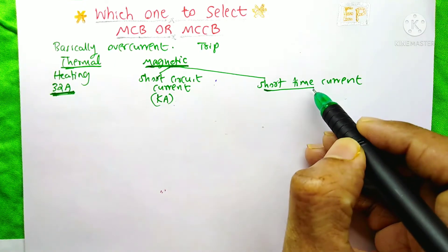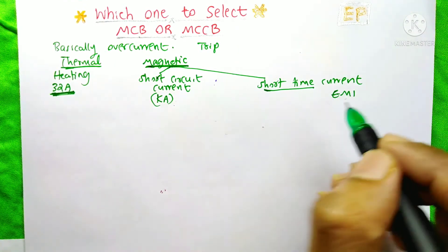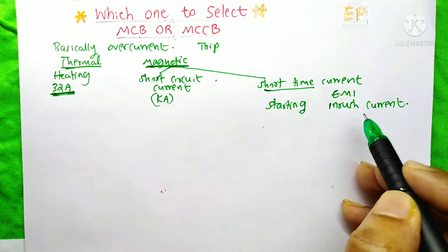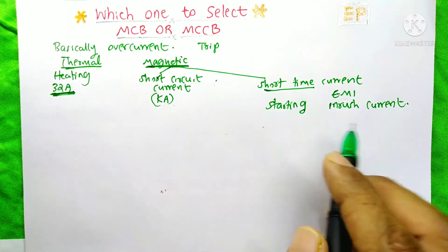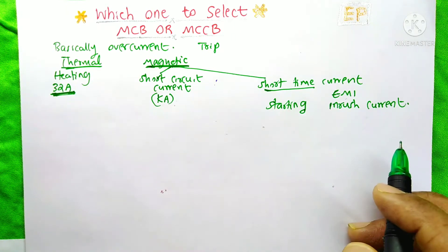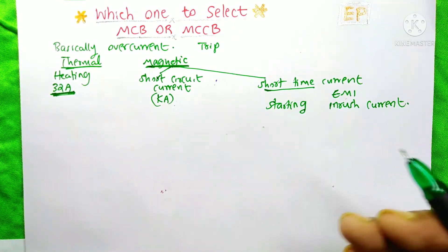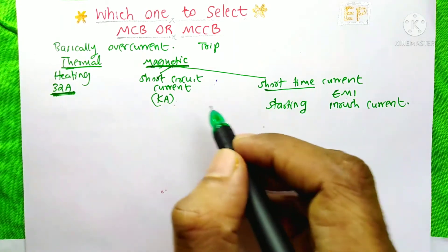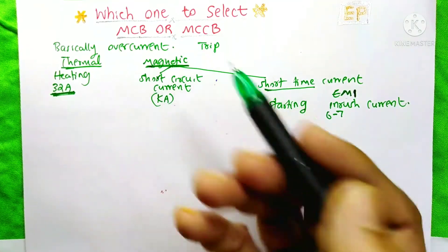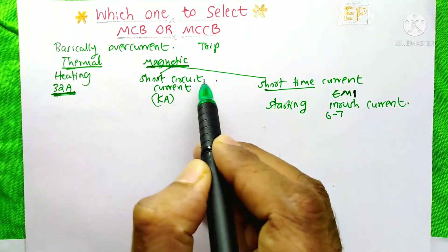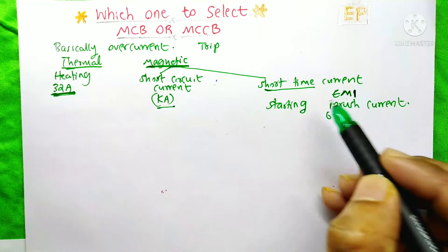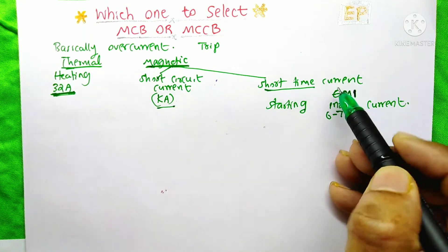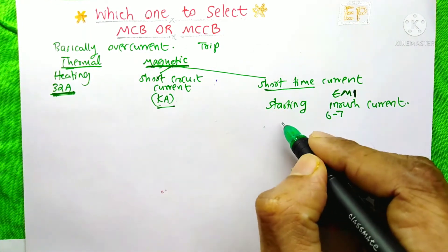Whenever any appliance working under the principle of electromagnetic induction starts up, it produces a high inrush current in the circuit. The MCB or MCCB should not trip because of this inrush current, as it is a normal occurrence and lasts only a few seconds. But sometimes this inrush current is more than expected, and then we need to trip the circuit. In both MCB and MCCB, the short circuit current setting is automatic, but the short time current can be adjusted only in the MCCB. In MCB, short time current behavior depends on the B, C, D curves.